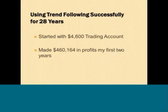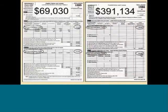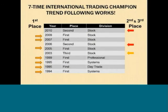I started with a $4,600 trading account, and within my first two years I made over $460,000 in actual profits. Here are copies of my Schedule D for those first two years — starting with a $4,600 account and using this basic trend system, I made over $460,000 in actual profits, mostly from stock option trading. I've also used this same system in the International Trading Championship and was able to have seven first-place finishes and a couple of second- and third-place finishes.